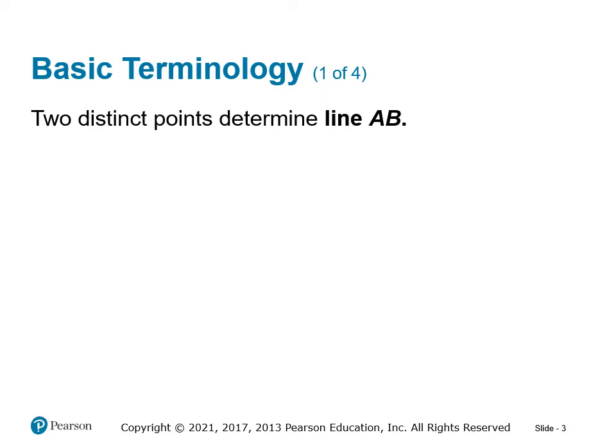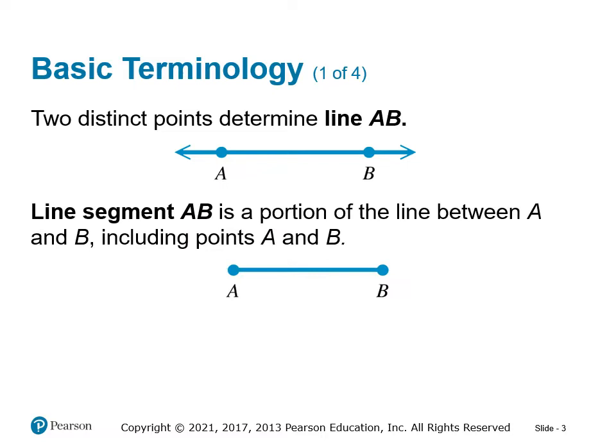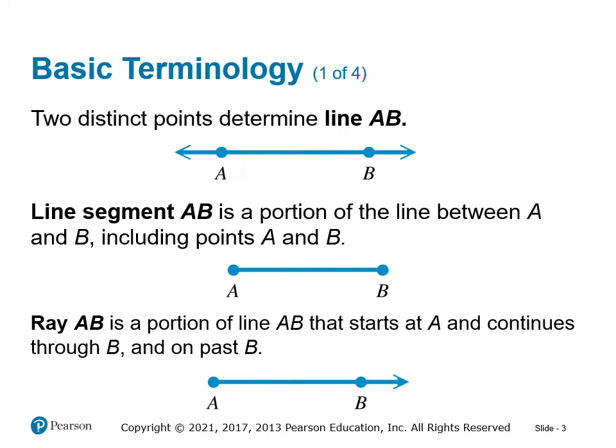There are two distinct points to determine a line AB. If we connect any two points with a straight segment, we have a line, identified as line AB. A line segment is the portion of the line between A and B, including points A and B, but it doesn't continue on — a line is continuous, where a segment is not. A ray is a portion of line AB that starts at A and continues through B and past B, going in one direction.